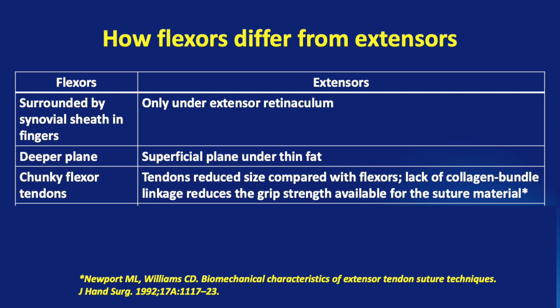The chunky flexor tendons are usually rounded except in FDP zone 5, so they are able to hold sutures well. But the extensor tendons have a flat tendon profile in zone 1 to 4, and this increases the surface area between the repaired tendon and the adjacent tissues, particularly bone, which makes it susceptible to adhesion formation.